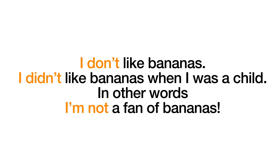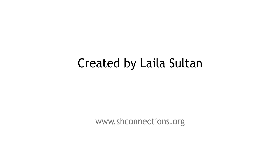So finally: 'I don't like bananas' — statement of fact. 'I didn't like bananas when I was a child' — statement of fact about the past. In other words, using 'I'm not' in the present simple: 'I'm not a fan of bananas.' We say 'I am not a fan' if we don't like something. I hope this helps you understand when to use 'I don't,' 'I didn't,' and 'I'm not.' Thanks for listening.